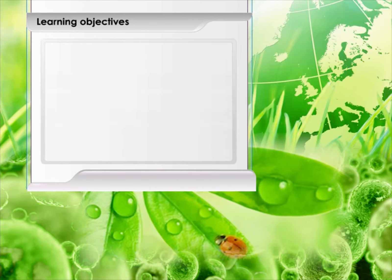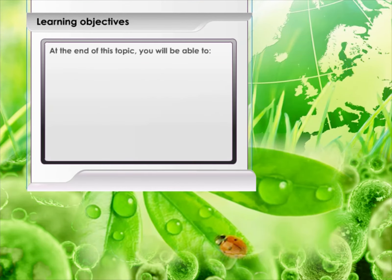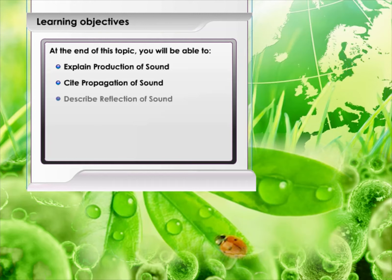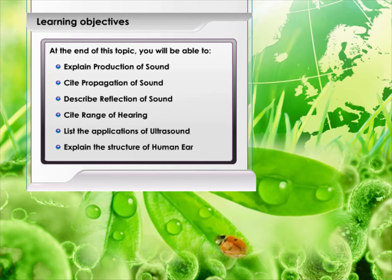Learning Objectives. At the end of this topic, you will be able to: explain the production of sound, describe propagation of sound, describe reflection of sound, state the range of hearing, list the applications of ultrasound, and explain the structure of the human ear.